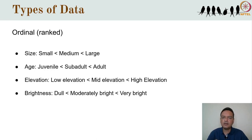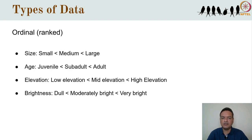This ordering cannot be done for categorical variables. And note that although the different states can be ranked with respect to each other, the interval between ranks need not be uniform and may not be known at all. So although we know that an adult is older than a sub-adult, there is no information inherent there about how different they are in age, nor whether the difference is the same as the difference between a sub-adult and juvenile or not.